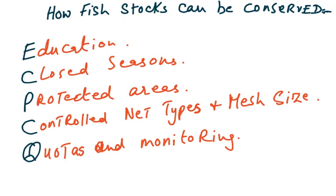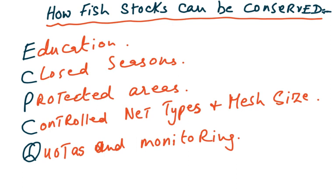Now, how can fish stocks be conserved? We are overfishing, which is depleting fish populations. In overfishing, we take out too many fish, including the smaller ones. The smaller fish would have grown and bred next year, but we are removing them too, and since they can't be sold, they are just thrown away as dead fish. So how can we conserve fish stocks?